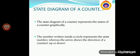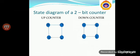Next is the state diagram of the counter. The state diagram of a counter basically represents the states of a counter graphically. The number written inside the circle represents the state number, whereas the arrow shows the direction of the counter. Here, we will discuss the state diagram of a 2-bit counter. We have two counters: up counter and down counter. For a 2-bit counter, it will have 4 states, and the up counter will count from 0, 1, 2 to 3. In the state diagram, after state 0 the next state is 1, after 1 the counter goes to state 2, from 2 it goes to 3, and back to 0. In a down counter, the counter counts from a larger number to a smaller number. The initial state is 3; from 3 it counts to 2, from 2 it goes to 1, from 1 it goes to 0, and back to 3.